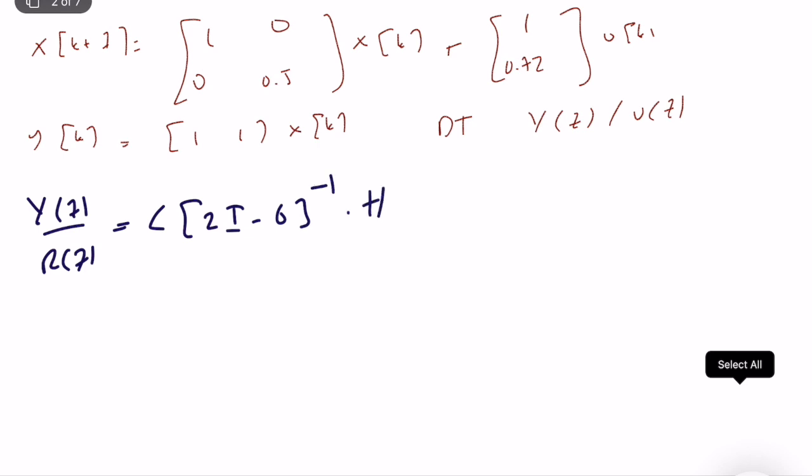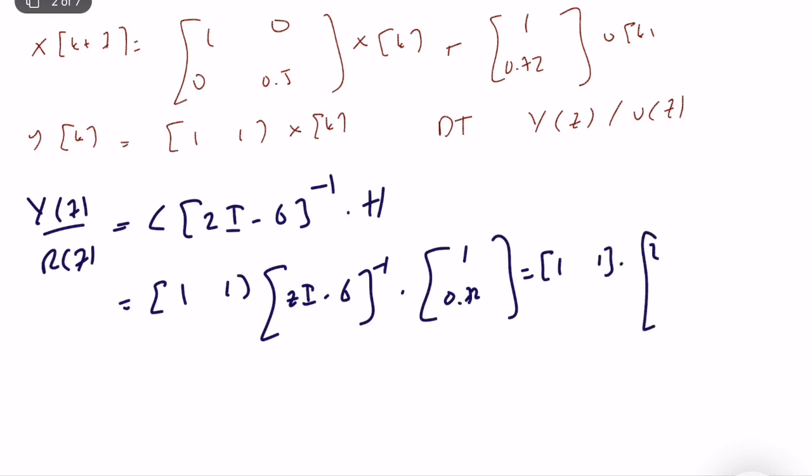C times (zI minus G) to the power inverse times H. Very nice. And it is equal to 1, 1. zI minus G inverse times 1, 0.72. That's great. So let's write it like this. So 1, 1.